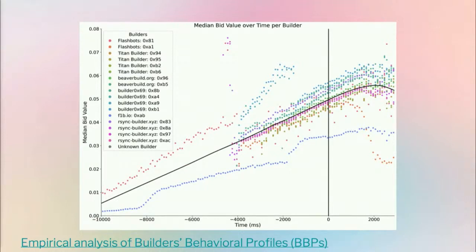On the x-axis we have time, on the y-axis we have the median bid value, and all the different colored dots represent different builders. We see a lot of disparity between bidding strategies. For example, in the bottom corner there's a red dotted line representing one builder and a blue dotted line representing another, and these are quite far apart with the difference remaining quite constant. This could probably be attributed to some form of exclusive order flow. Some builders only start bidding very late into the slot, and we even see median bid value might decrease for some builders, which could be due to bid cancellations where external state moves, meaning MEV extraction might be less profitable.